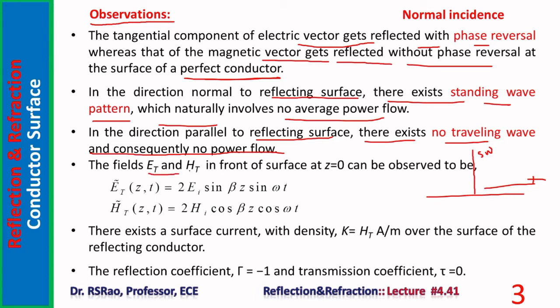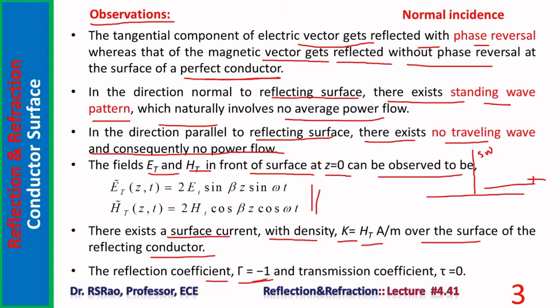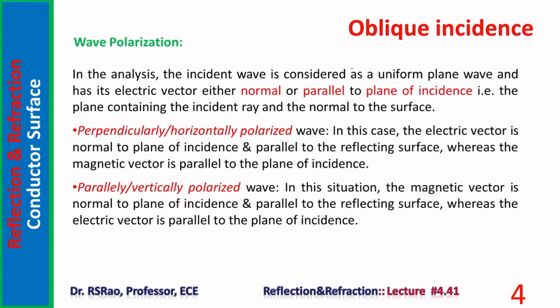In the direction parallel to the reflecting surface, there exists no traveling wave and consequently no power flow. The fields E_t and H_t in front of the surface at z equals zero are as derived. There exists a surface current with density K equal to H_t amperes per meter. The reflection coefficient (reflected wave amplitude divided by incident wave amplitude) is minus one. The transmission coefficient is zero because there is no transmitted wave — a perfect conductor produces no refracted or transmitted wave.